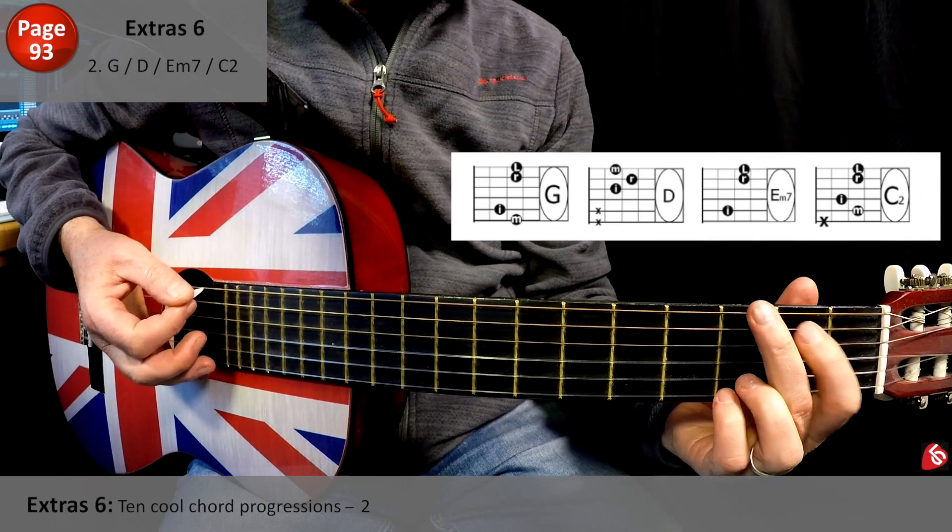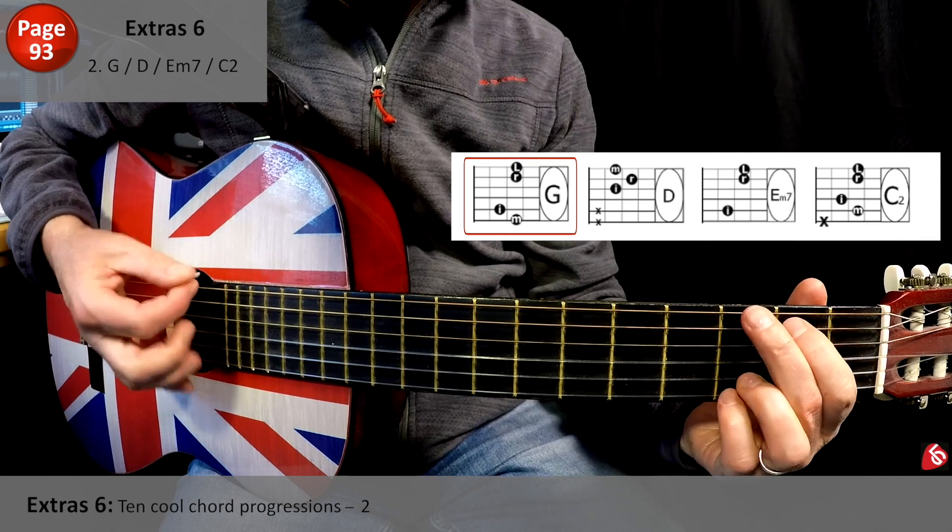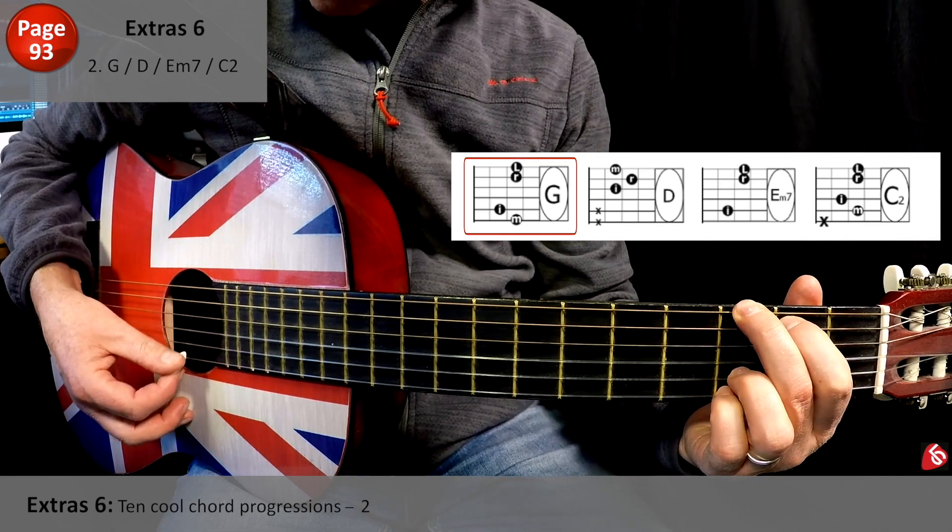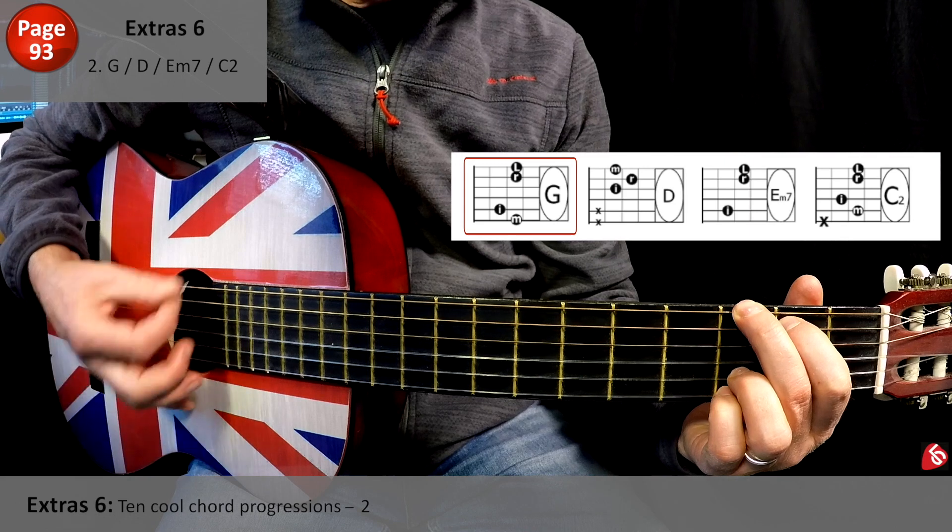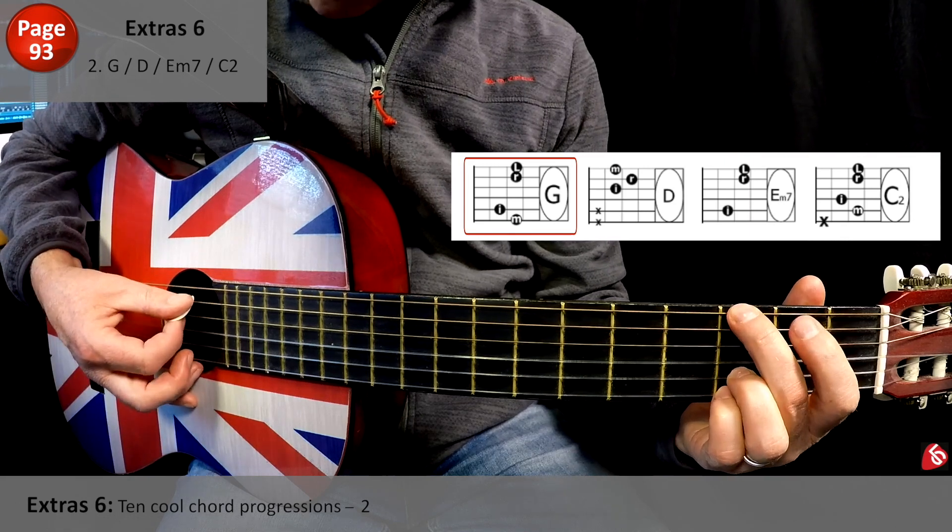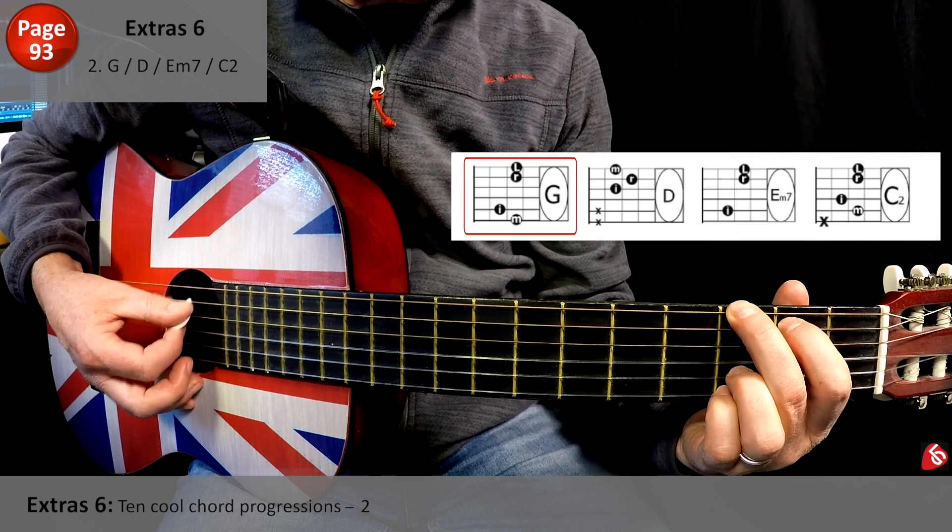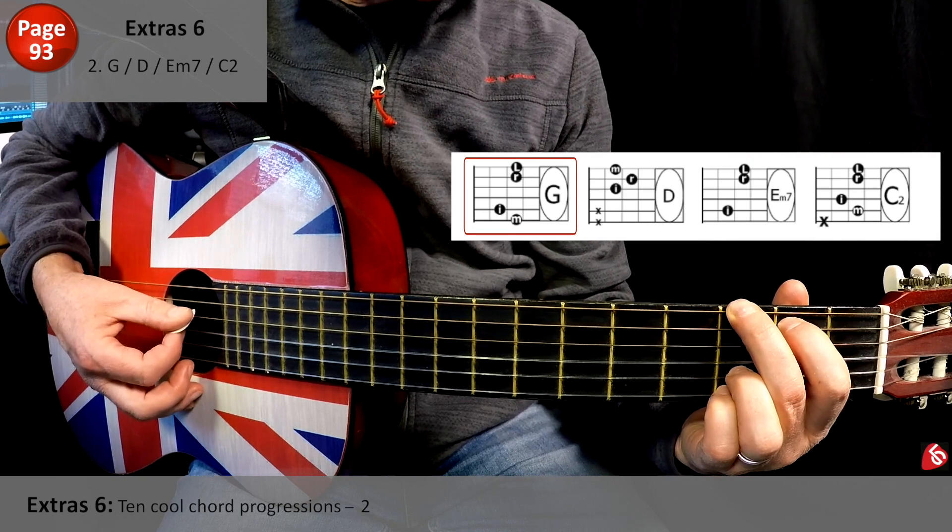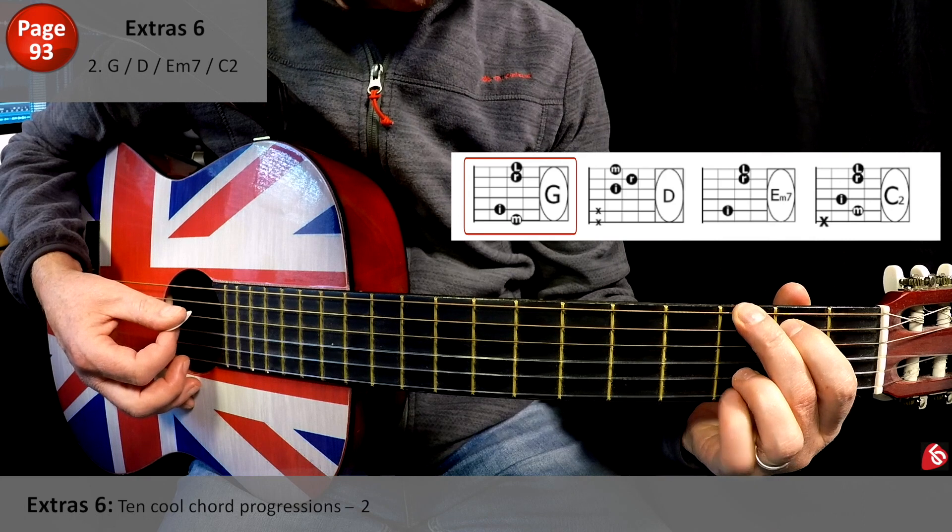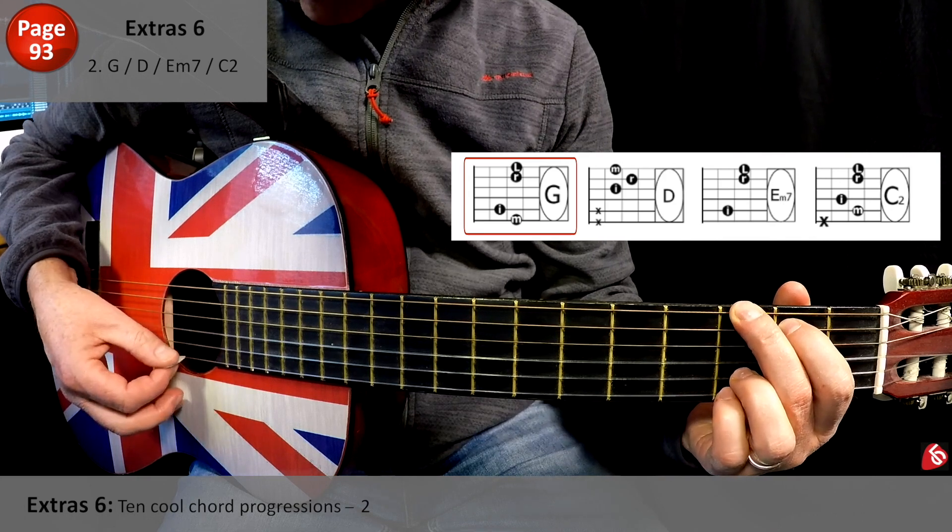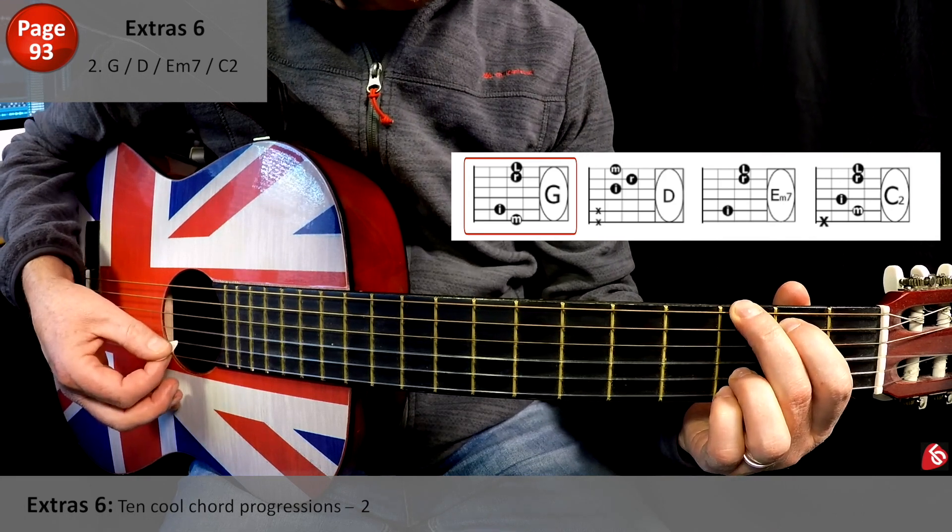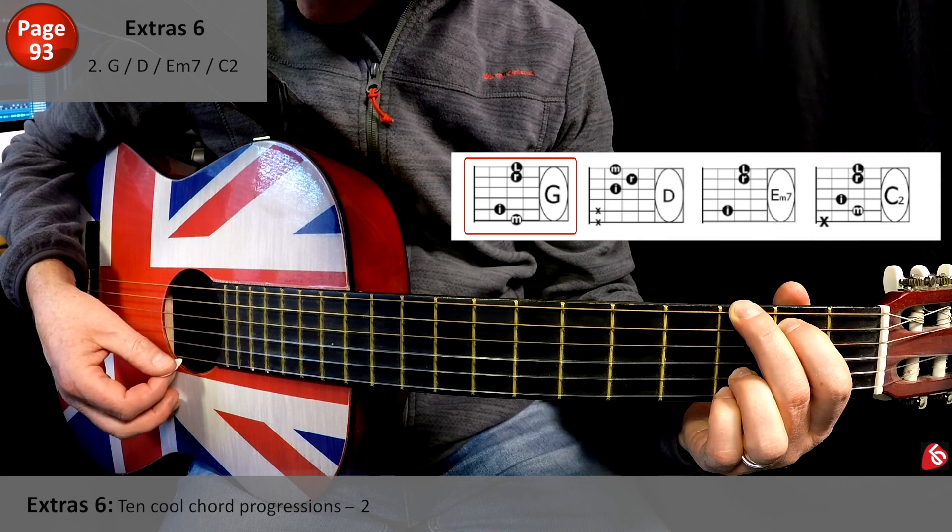OK, so let's look at the G. I'm using this arrangement for G. Tool G we call it. So middle finger, 6th string, fret 3. Index finger, 5th string, fret 2. And the ring and the little finger are tucking underneath there, right at the bottom on fret 3, on the 1st and 2nd string.